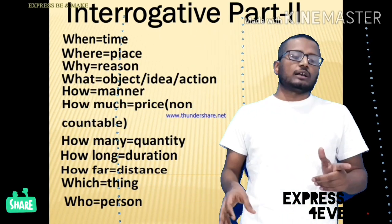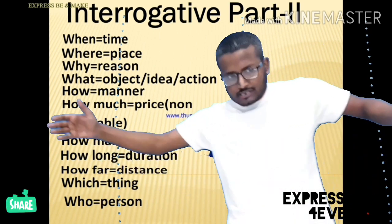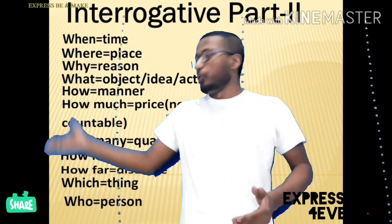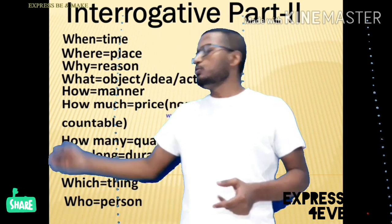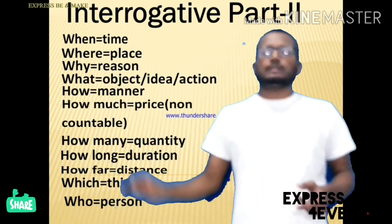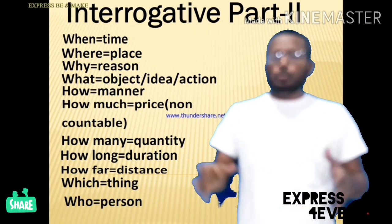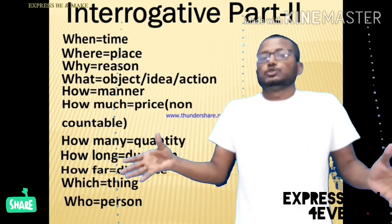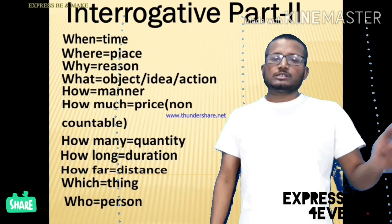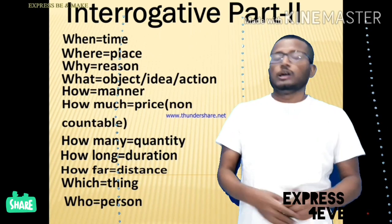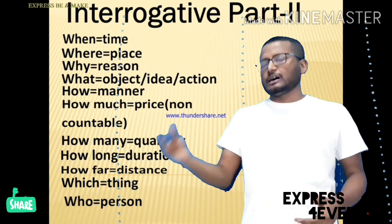'How far' deals with distance. Then 'which' is also in the list. And 'who' — you can see there is a star mark next to 'who' as well. 'Who' refers to the doer, meaning the subject — the person who is doing the action.